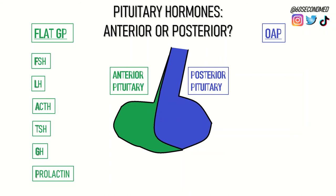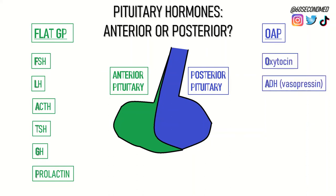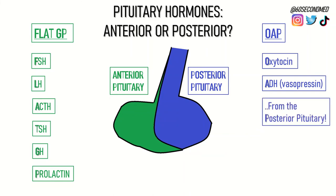In the posterior pituitary, we can think about the mnemonic OAP to help us remember the hormones secreted from the posterior part of the pituitary. O stands for oxytocin, A stands for antidiuretic hormone (ADH), also known as vasopressin, and the P is to help us remember that these hormones are secreted from the posterior pituitary.